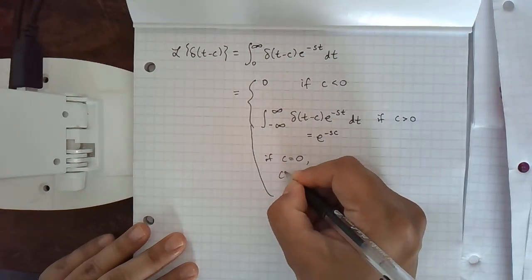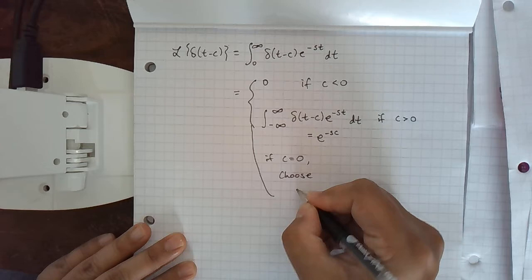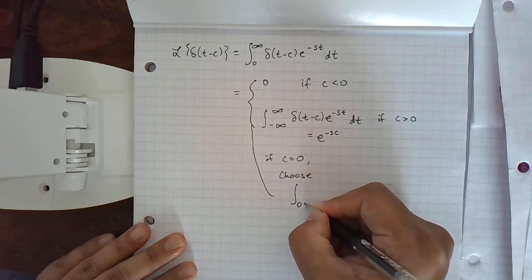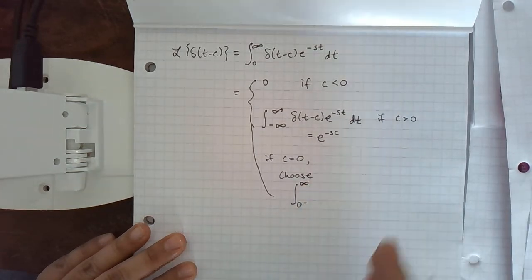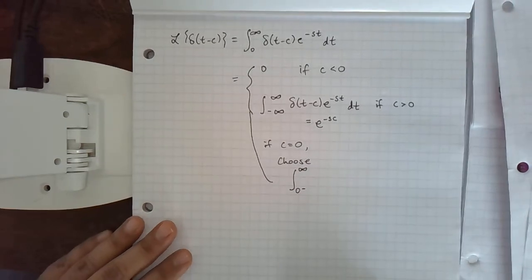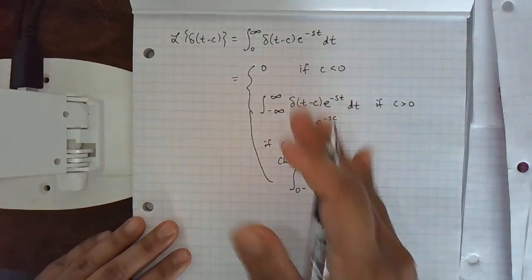So we're going to choose to take the integral from what we'll call zero minus, which is slightly to the left of zero. If we went slightly to the right of zero, it would be a vastly different result.